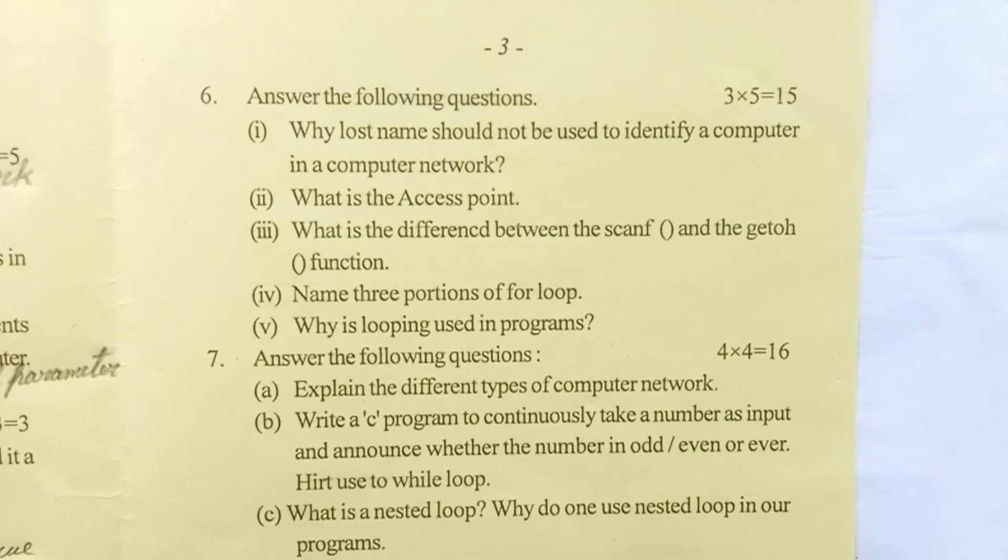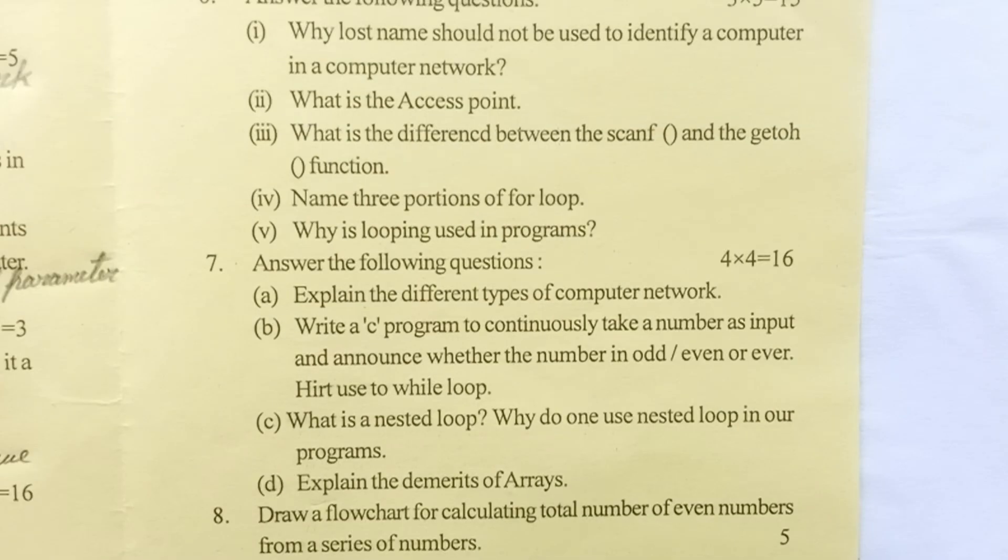Question four: name three portions of for loop. Question five: why is looping used in programs? Question number seven: answer the following questions. This question carries 4 into 4 equal 16 marks. Question A: explain the different types of computer network.